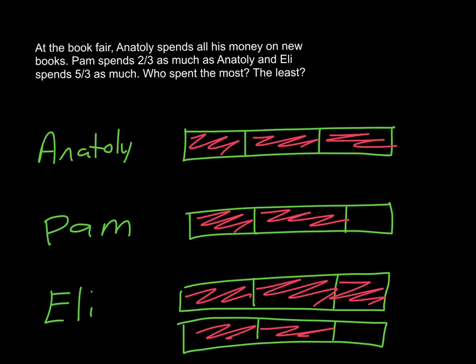And then Eli, we saw that we can't fit everything that Eli spent into one diagram. So we had to put a second that is the same size, but he's filling up five of those sections. So we can see that Pam spent the least, and Eli spent the most.